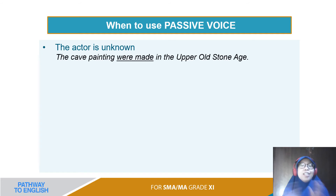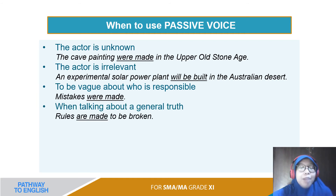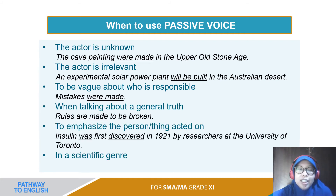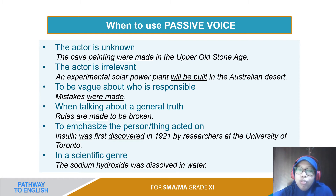Okay, this is when to use passive voice. The actor is unknown. Terkadang ada actor — pelaku — yang memang tidak dikenali. 'The cave painting were made in the upper old stone age.' 'The cave painting' adalah subject-nya, 'were made' adalah verb-nya, 'in the old stone age' adalah adverb of place. Di belakangnya tidak ada kata 'by', jadi tidak terlihat siapa pelakunya. The actor is unknown.